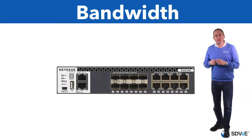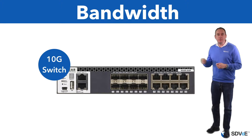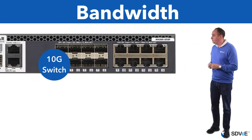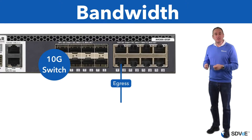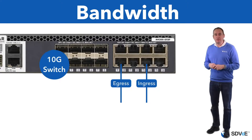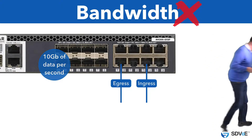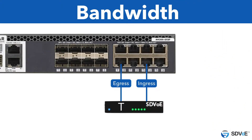When a network switch is described as being a 10 gigabit switch, it means that each port is able to send or egress and receive or ingress a maximum of 10 gigabits of data per second. This isn't bandwidth. Bandwidth is the amount of data actually being sent or received across a physical connection at any one time. This is the first key point to bear in mind.